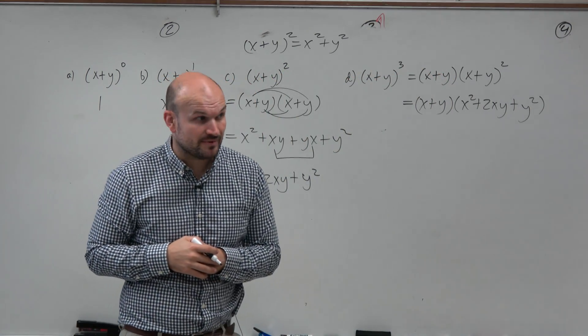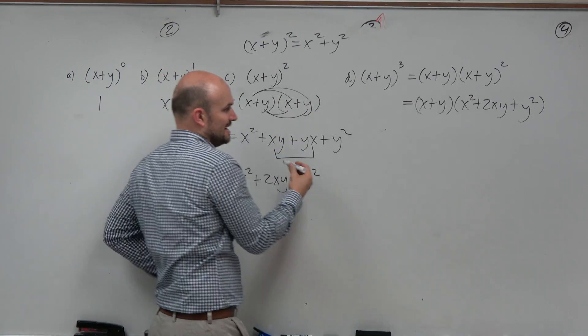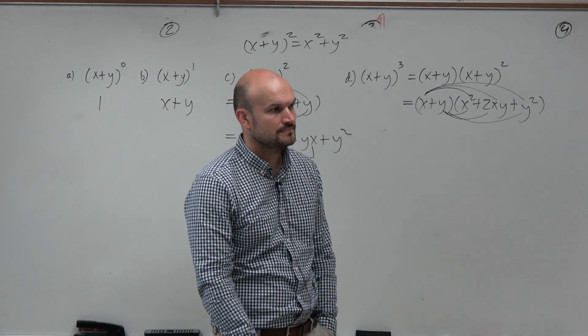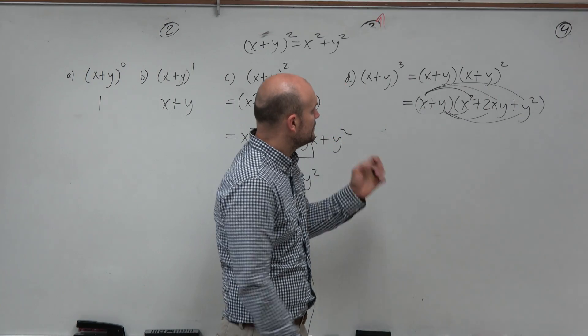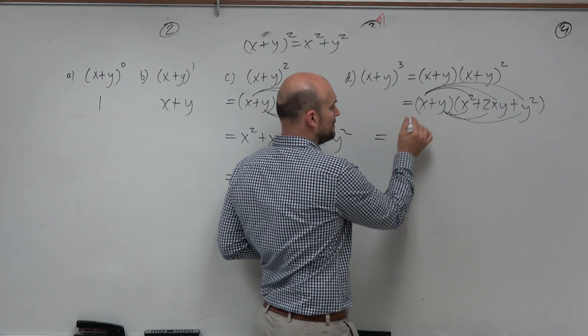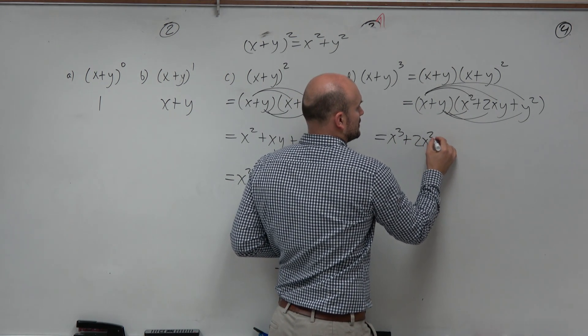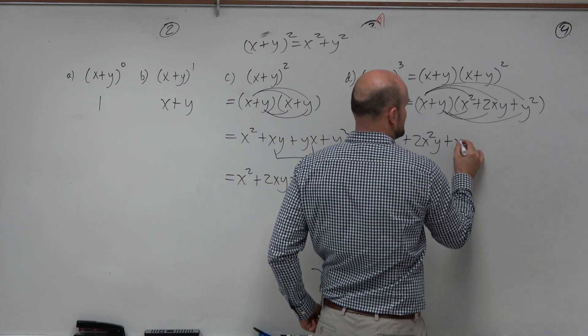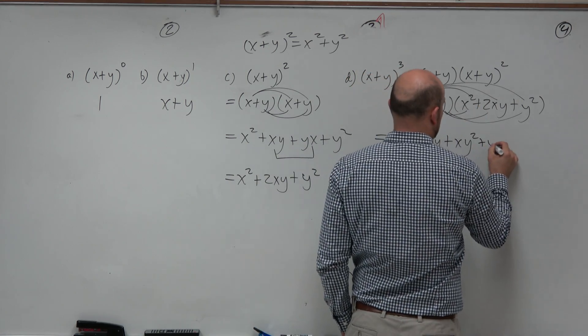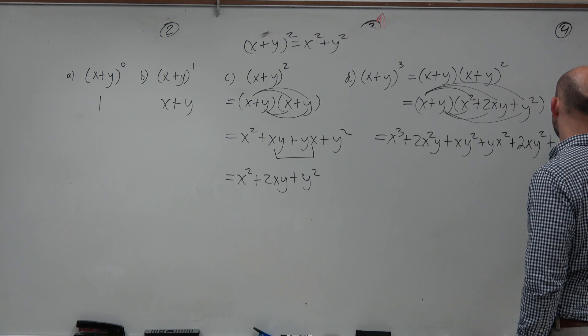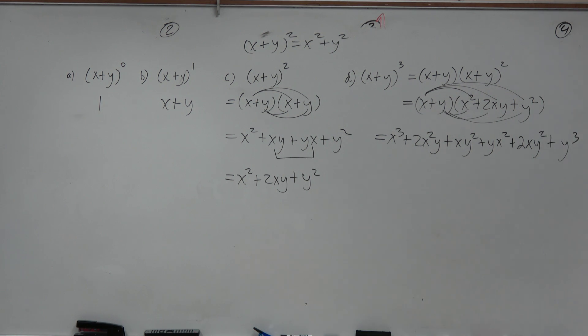Now, again, we need to do distributive property, but we don't have that nice little FOIL idea anymore. So we just need to understand that distributive property is multiplying every term times every term. So when we look at this now, x times x is going to be x cubed. x times 2x is going to be 2x squared y plus x times y squared is going to be xy squared. y times x squared is yx squared. y times 2xy is a positive 2xy squared. And y times y squared is y cubed. And you guys can immediately see there is a lot of terms that are going on.